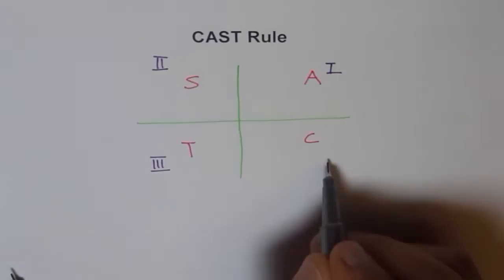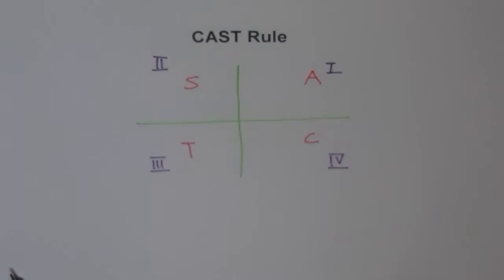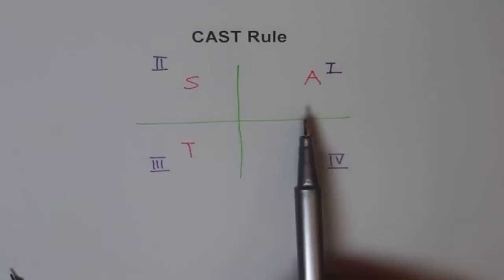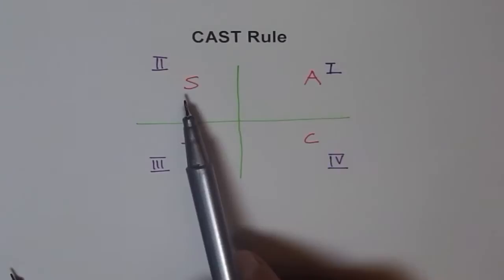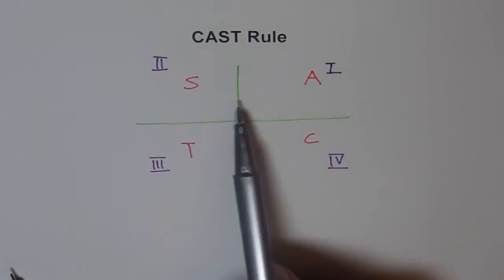The CAST rule says that all are positive in quadrant 1 — sine, cosine, tangent, and their reciprocals. In quadrant 2, only sine is positive. Let's consider only the main trigonometric functions: sine, cosine, and tangent.